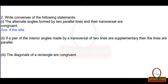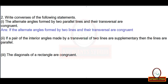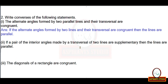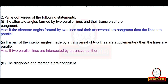Now write the converses of the following statements. To write a converse, the antecedent becomes the consequent and the consequent becomes the antecedent. For example, 'the alternate angles formed by two parallel lines and a transversal are congruent' — the converse is 'if the alternate angles formed by two lines and a transversal are congruent, then the lines are parallel.'